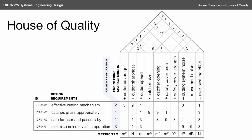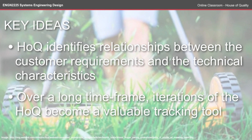So this completes our House of Quality at this stage. We might get to comparisons in the system evaluation topic, as well as the benchmarking and targets for our design. The key ideas are that the House of Quality identifies relationships between customer requirements and the technical characteristics of the design, and over a long time frame, iterations of the House of Quality become a really valuable tracking tool. Make sure you do the reading for the topic available on the website and the self-test available on Waddle. See you next time.